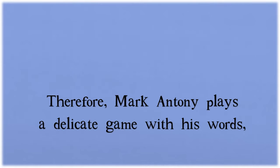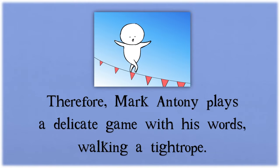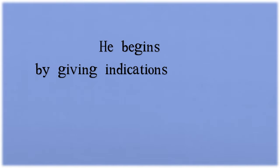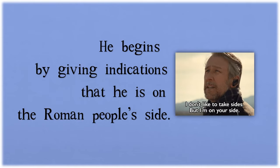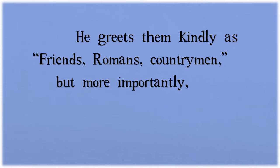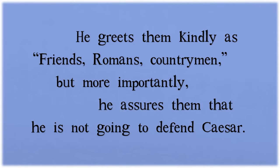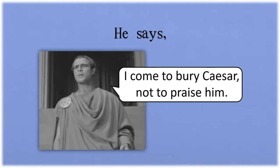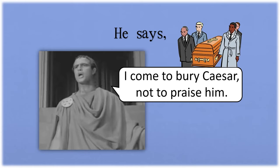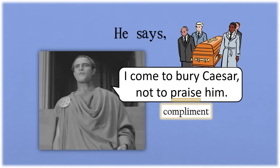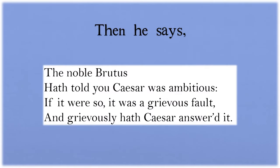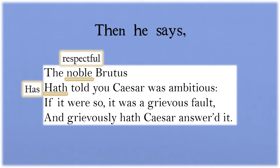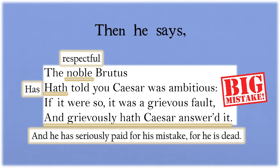Therefore Mark Antony plays a delicate game with his words, walking a tightrope. He begins by giving indications that he is on the Roman people's side. He greets them kindly as 'Friends, Romans, countrymen,' but more importantly he assures them that he is not going to defend Caesar. He says, 'I come to bury Caesar, not to praise him.' Then he says, 'The noble Brutus hath told you Caesar was ambitious. If it were so, it was a grievous fault, and grievously hath Caesar answered it.'